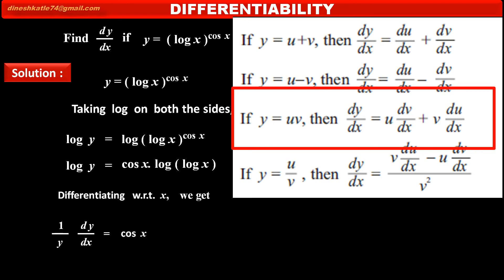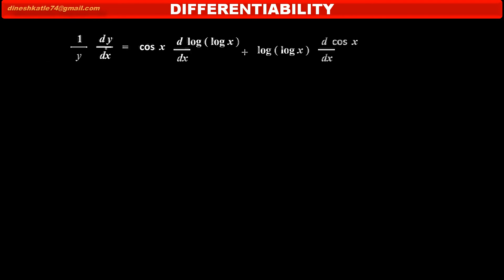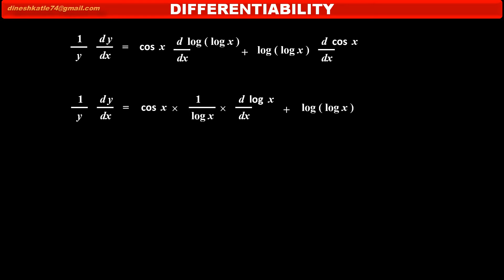Applying the product rule: u times the derivative of v, which is the derivative of log(log x), plus v times the derivative of u, which is the derivative of cos x. So we get: cos x · (1/log x) · (1/x) by chain rule, plus log(log x) · (−sin x).